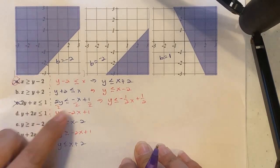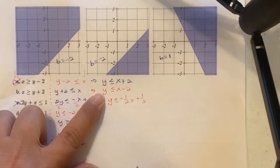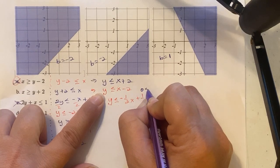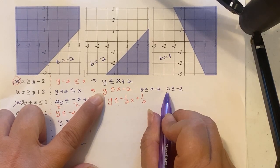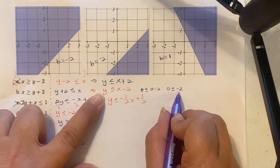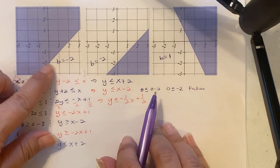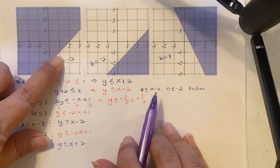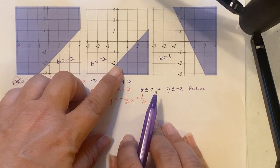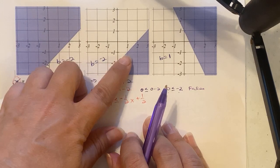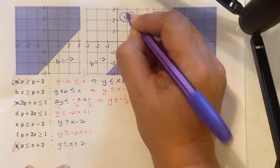Looking at equation B: plug in (0, 0) since none of these lines go through the origin. We get 0 ≤ 0 minus 2, meaning 0 ≤ negative 2 — that is false. So we shade away from the origin, which means shade down. The graph starting at negative 2, going up 1 over 1, shaded downward — that matches graph B.